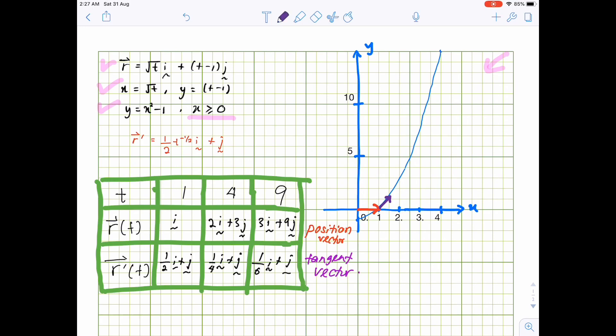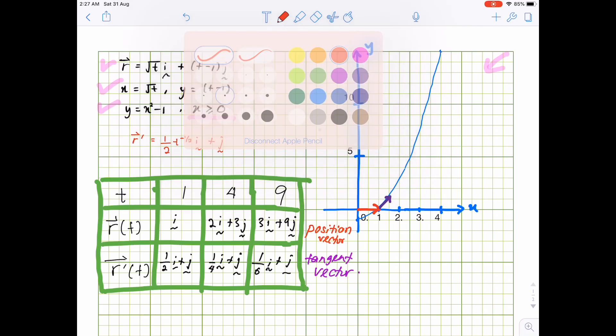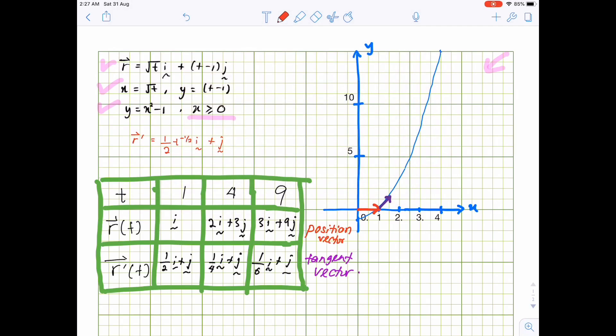Which is t equals to 4. We have 2i plus 3j. Somewhere here.